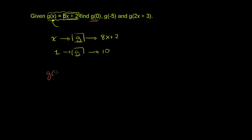g of 0 literally just means we're inputting 0 into this function. And this function says, whatever you're inputting, I'm going to output 8 times that plus 2. So g of 0 is going to be — let me write it this way so it becomes clear what I'm doing — g of 0 is going to be 8 times 0 plus 2.